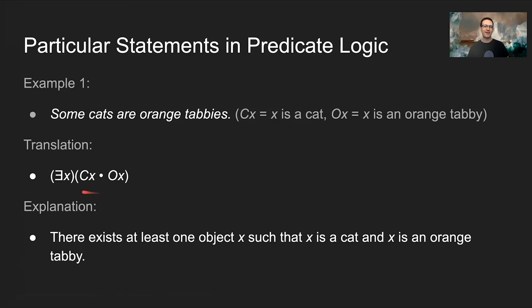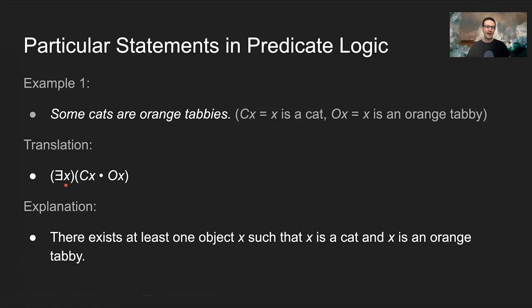For particular statements, you're generally going to have an existential quantifier, some expression governed by that quantifier, and that expression will have a dot — a conjunction. The left side of the dot is the subject of the particular statement (here, cats, so Cx), and the right side is the predicate — what you're claiming about that object, namely that it's an orange tabby. So there exists some x such that x is a cat and x is an orange tabby.